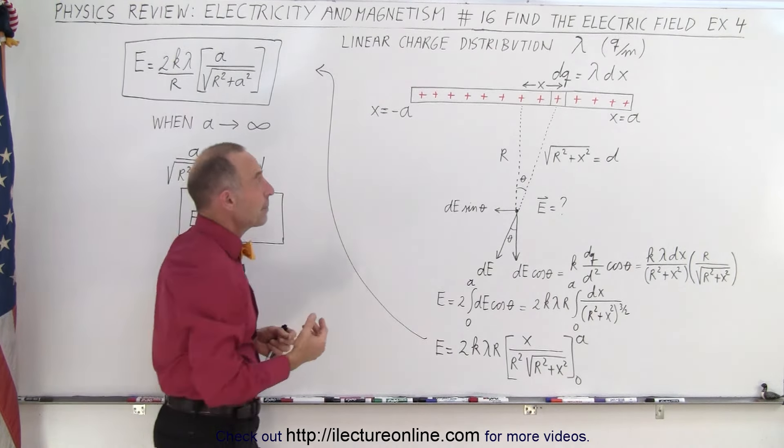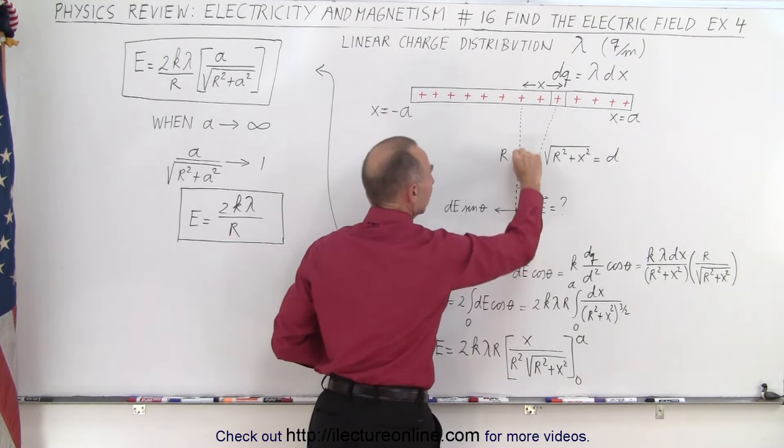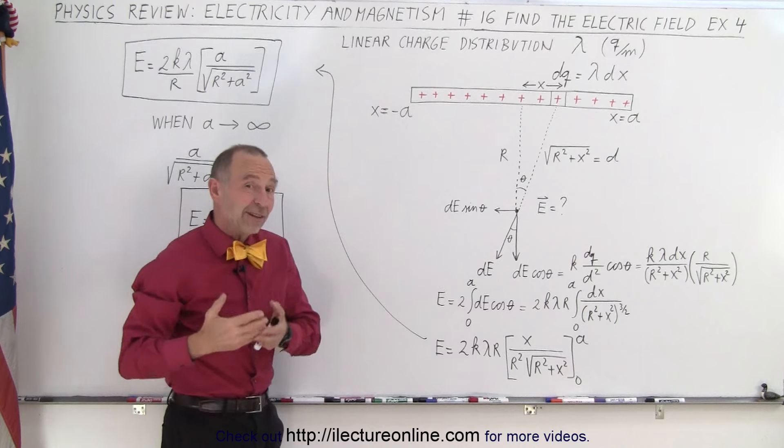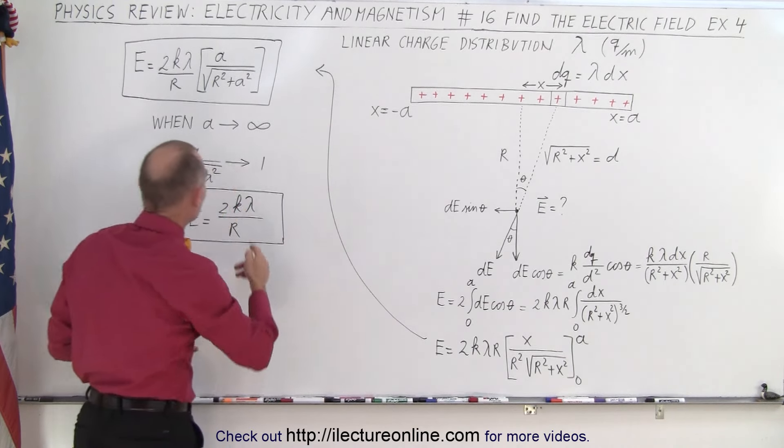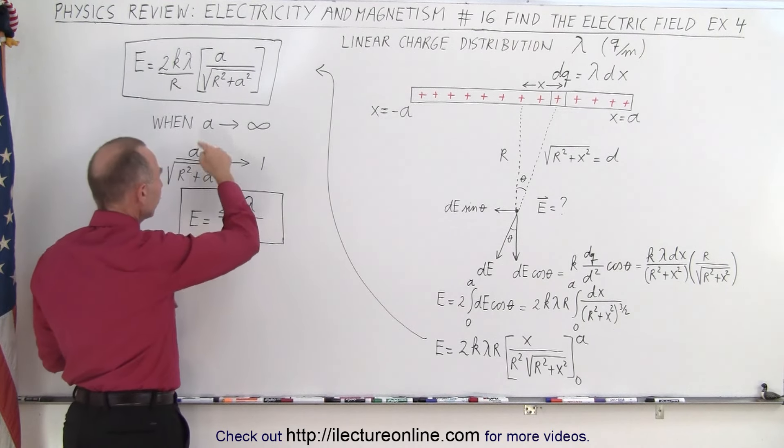Of course you say, well what's the purpose of that, because there's no such thing? But what that means is, let's say you have a long object that has charge on it and you're relatively close to that. So when r becomes very small relative to a, then it acts as if it's an infinite charge distribution.